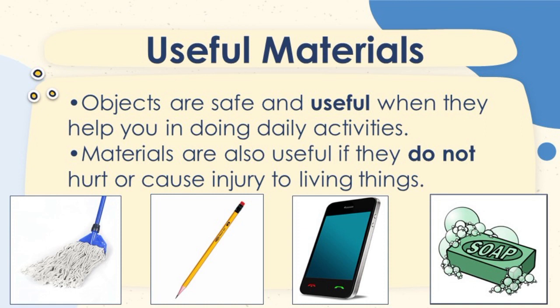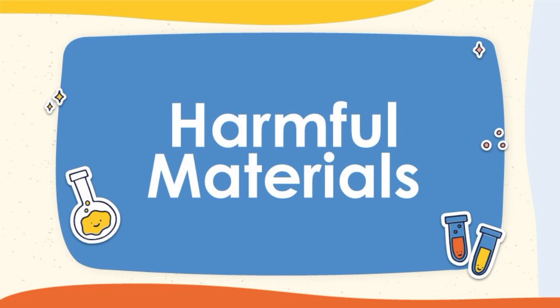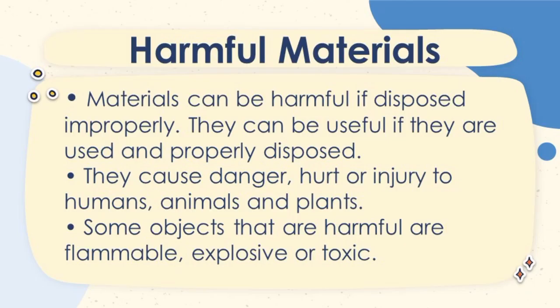Examples of useful materials are mop, pencil, cell phone, and soap. Harmful materials — materials can be harmful if disposed improperly. They can be useful if they are used and properly disposed.